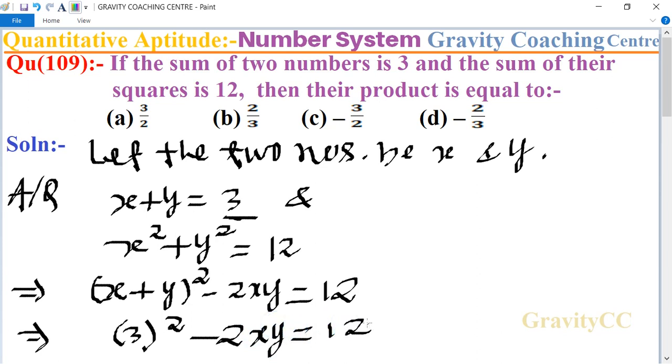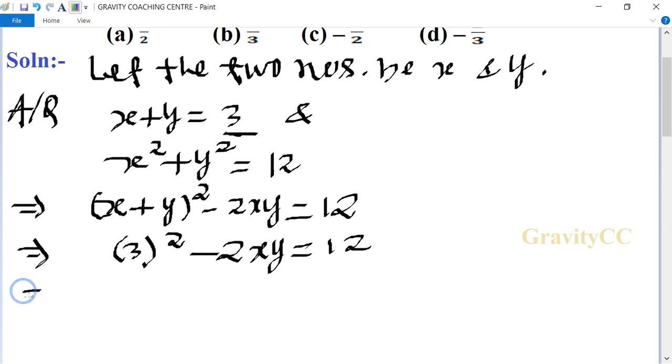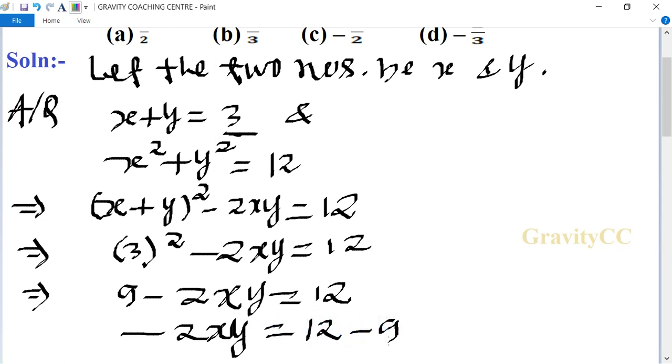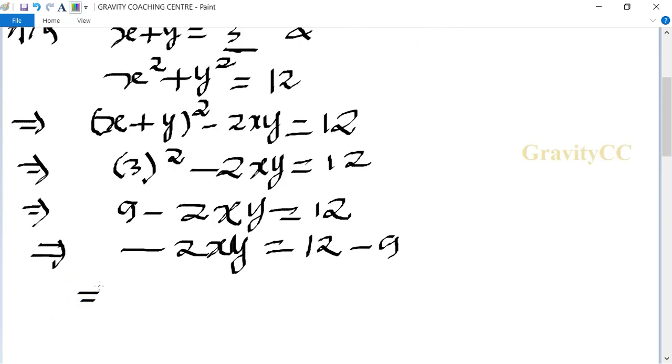This implies that 9 minus 2xy equals 12, and minus 2xy equals 12 minus 9, which implies that minus 2xy equals 3.